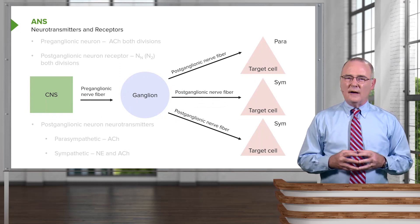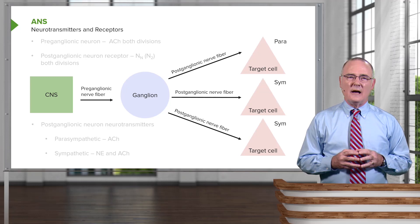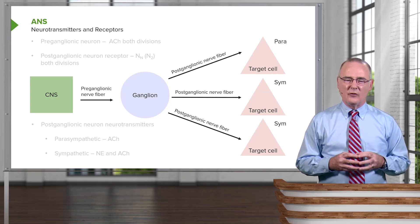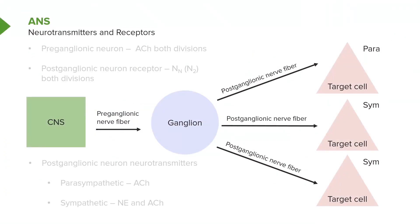In order to carry out their function, the autonomic nervous system utilizes an array of neurotransmitters and receptors for its communication. We have a basic blueprint here: the central nervous system, the preganglionic nerve fiber extending out to the periphery, synapsin within the ganglion, and then the postganglionic nerve fiber extending out to the target cell. The preganglionic neuron will secrete as its neurotransmitter, in both the sympathetic system and the parasympathetic system, acetylcholine.